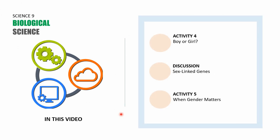As a recap, this PowerPoint had three parts. First, Activity 4 'Boy or Girl' covered sex determination — what happens when an egg cell pairs with an X sperm or a Y sperm. For the discussion, we talked about sex-linked genes including color blindness and hypertrichosis pinnae auris. For Activity 5, we solved a problem asking for offspring data when a color blind male has children with a female who is a carrier of the disease.